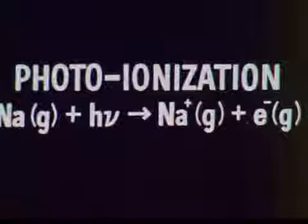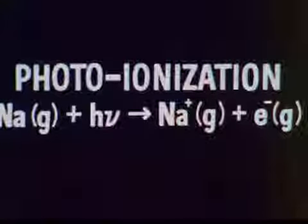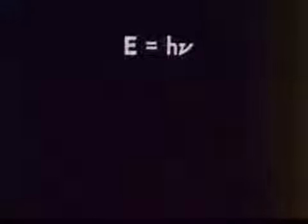Now let's take a look at this process on the molecular level. A sodium atom absorbs a photon, and almost immediately an electron is ejected. The resulting charged particles then move under the influence of the electrodes. This process is called photoionization: a sodium gas atom plus a photon gives a sodium gas ion plus one electron. With this equation, we can calculate the ionization energy of sodium.